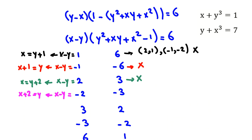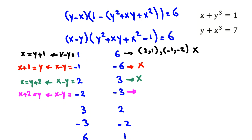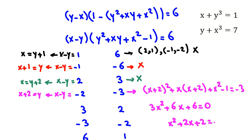For x minus y equals −2: y equals x plus 2. Replacing gives x squared plus 2x plus 2 equals 0, which is (x+1) squared plus 1 equals 0. This is impossible since the left side is always positive.